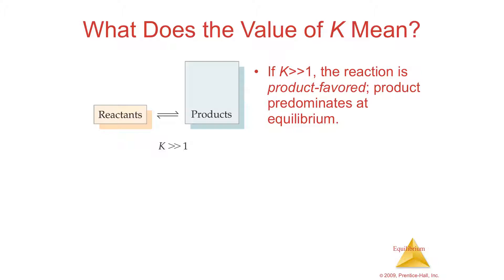The second important part of this section is being able to make a quick guess from an equilibrium constant: will you have more products or more reactants? Let's look at a basic fraction. If I have 10 divided by 2, I get a number bigger than 1. If I have 10 divided by 10, or 2 divided by 2, those equal 1. Anytime you have the same number over itself, you get 1.